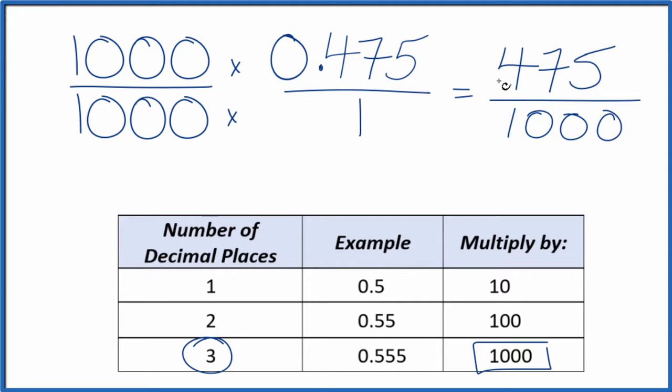We can reduce this though to simpler terms. I know that five would go into 475 and also a thousand, but 25 goes into 475 and a thousand as well.